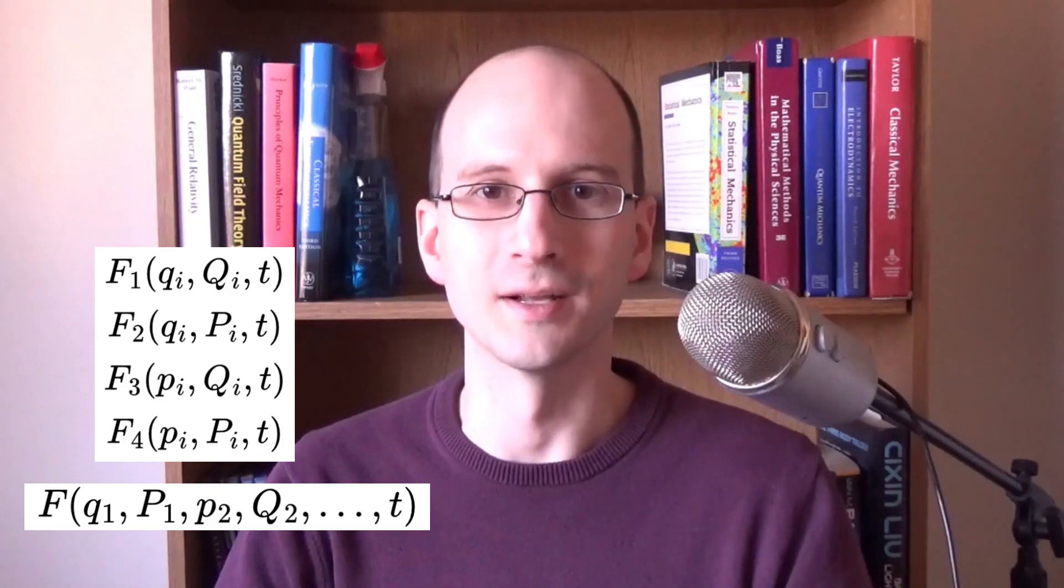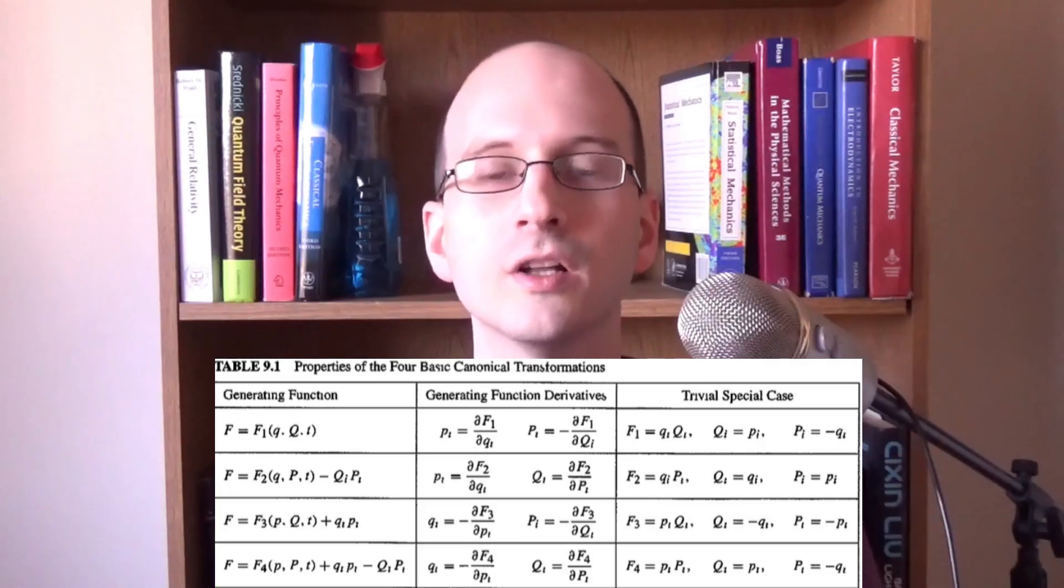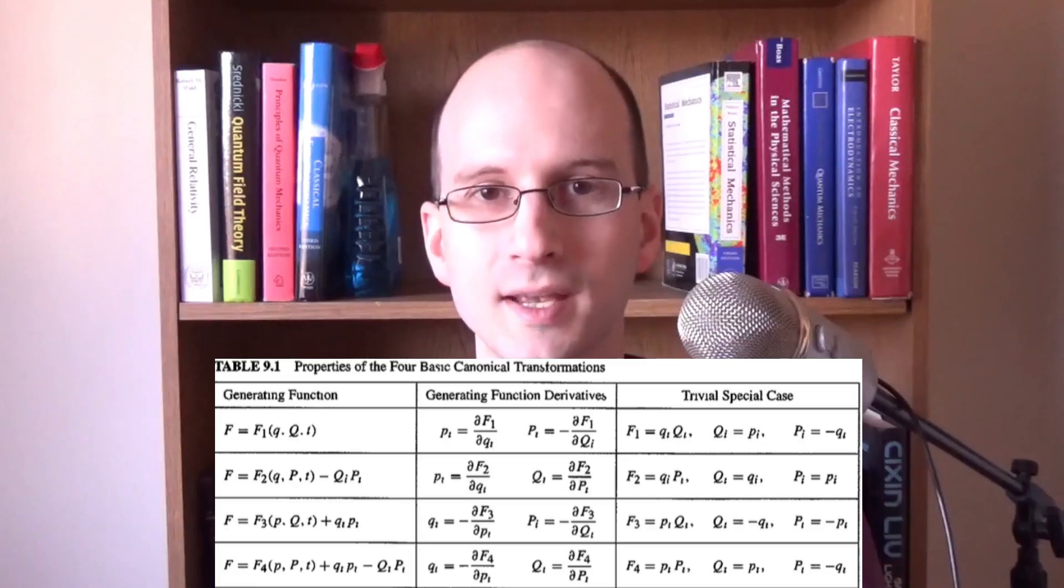So why do we call this F1? Well, it turns out there's an equivalent process for functions of every combination of the new and old coordinates and momenta. As long as one is new and the other is old, it works. And there's four possible pairings of new and old like this. Actually, it's also possible to use generating functions that mix having some new coordinates, some old coordinates, some new momenta, and some old momenta, as long as each one is paired from one of the set of the other. Hopefully, if that doesn't make sense, the function on screen clears it up. Here's a table of the types given in the textbook, along with their associated equations and a simple example of each.